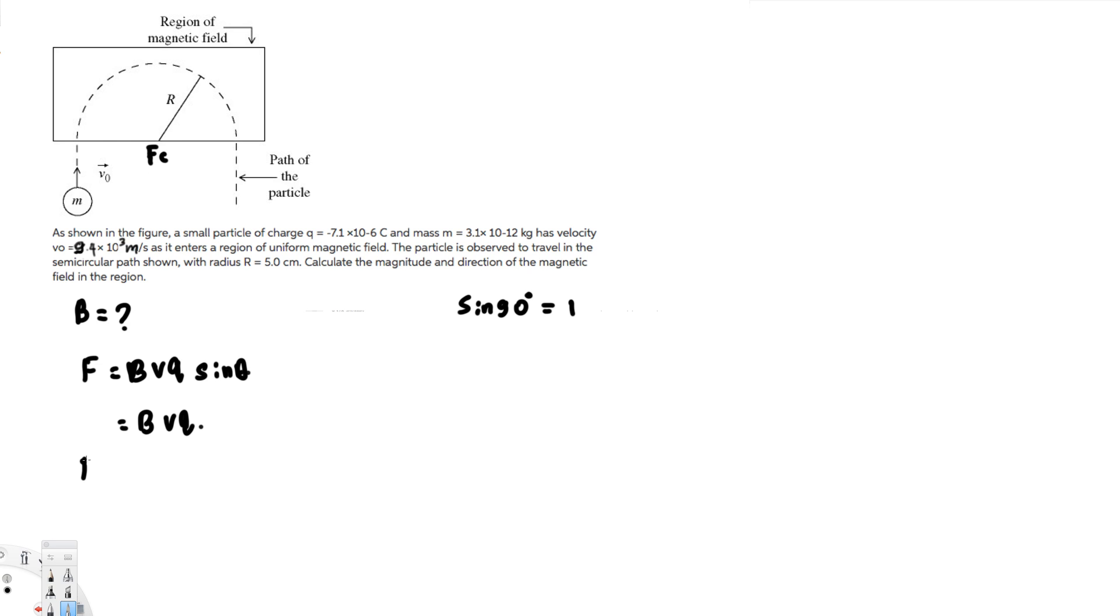The centripetal force Fc = mv²/r, and the magnetic force BVQ—both the centripetal force and magnetic force are equal, so we can equate these two values: BVQ = mv²/r.